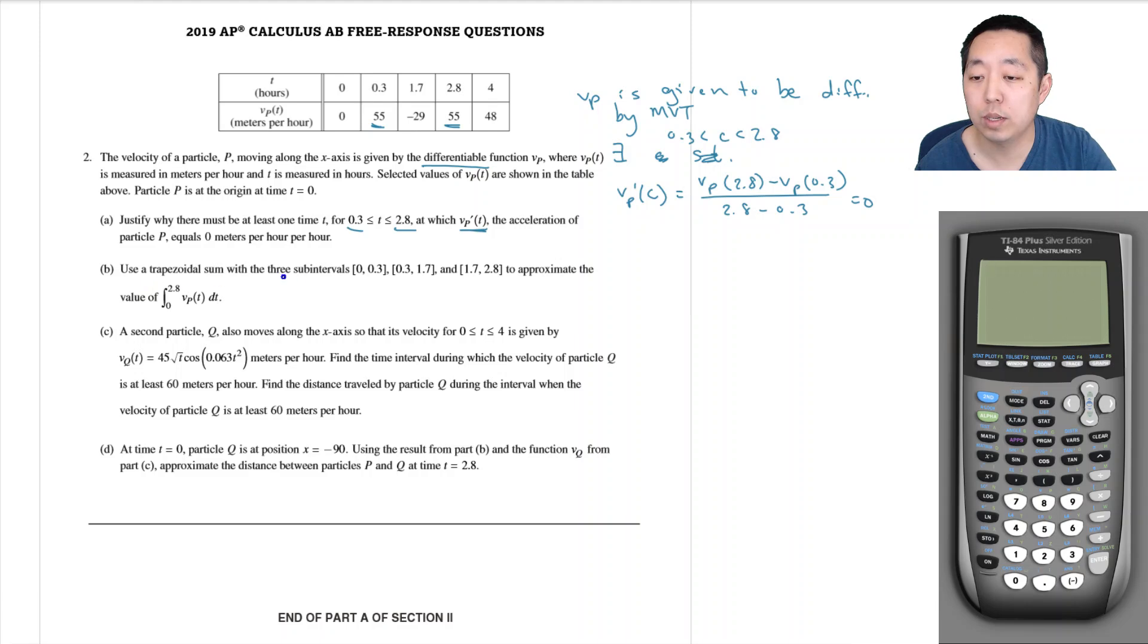Use a trapezoid sum with three sub-intervals to approximate the value of this. Trapezoid rule means I average the y values and multiply by the interval width. So it's approximately equal to 0.3 times 55 plus 0 over 2, plus this interval width is 1.4 times 55 minus 29 over 2, plus this interval is 1.1 times negative 29 plus 55 divided by 2. And then we just simply do this on our calculator.